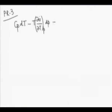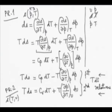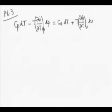The right hand side of the first TdS equation is CP dT minus T times dV/dT at constant P times dP. The right hand side of the second TdS equation is CV dT plus T times dP/dT at constant V times dV. I transpose the dT terms to the left and dP and dV to the right, then divide throughout by the coefficient of dT which is CP minus CV.